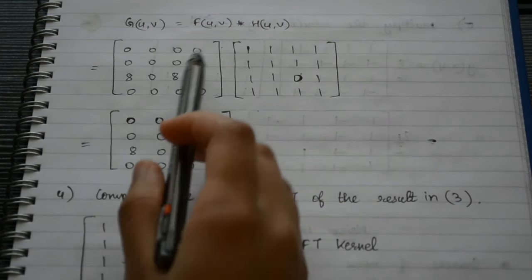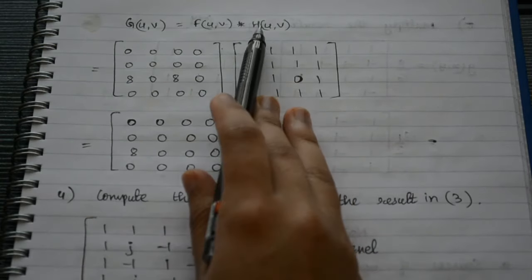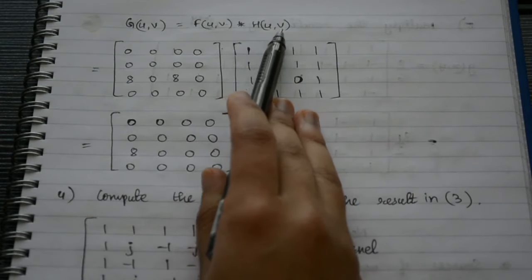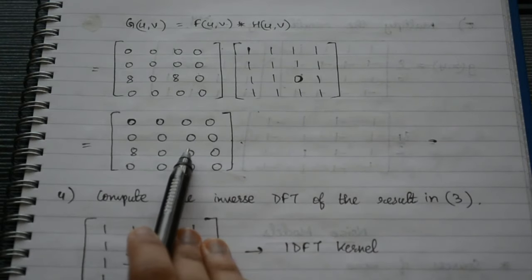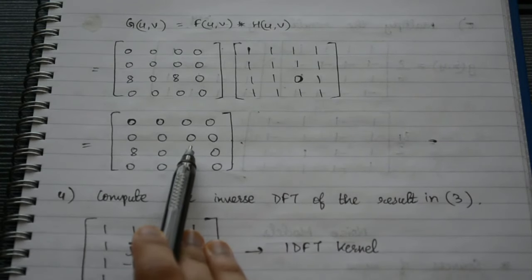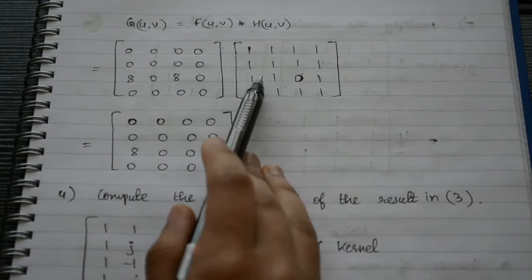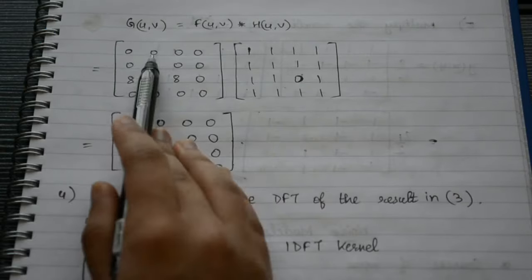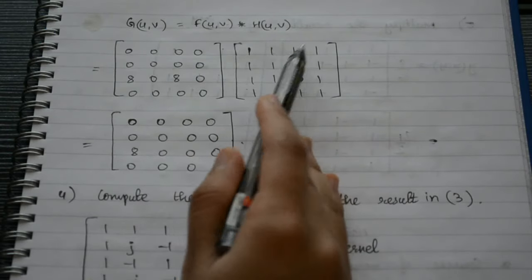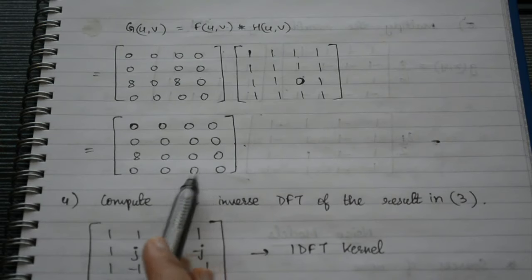Next is the convolution: we take F(u, v) from step 2 and H(u, v) just calculated, and multiply them pixel by pixel — not matrix multiplication, but element-wise multiplication of corresponding pixels. This gives us the filtered frequency domain image.